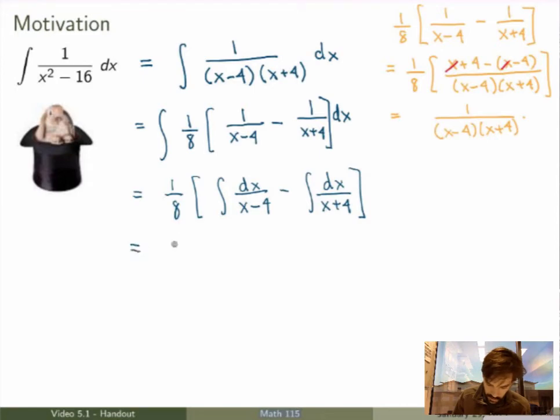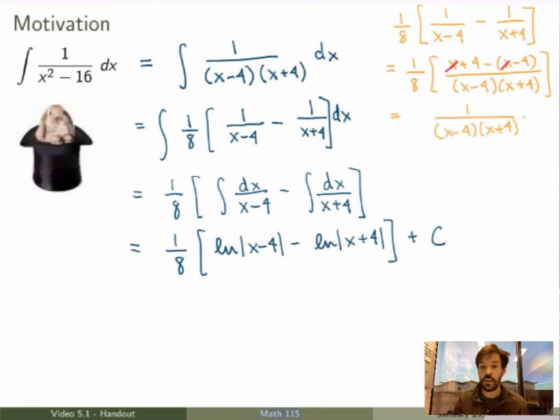But both of those are easy to do. What I get is 1 over 8 times the log of x minus 4 minus the log of x plus 4 plus my constant of integration, which I could rewrite as 1 over 8 log of x minus 4 over x plus 4.